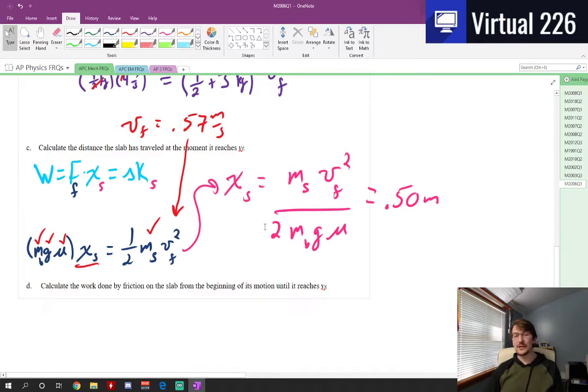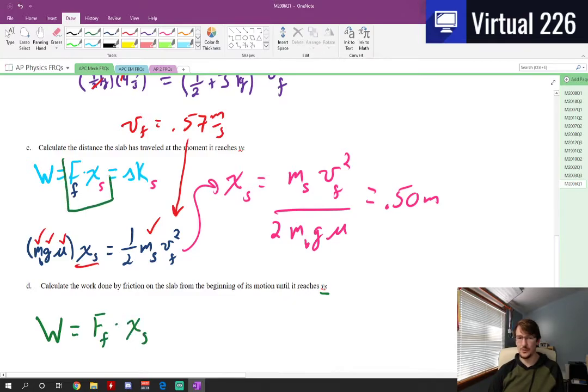Doing it this way is also really nice because in part D we're asked to figure out what is the work done by friction on the slab from the beginning of the motion until it reaches the speed VF, which means that we just need to say work is equal to the force of friction times the distance we've traveled, which is literally what we just did above it, except now we know the distance. So this final answer here just quickly becomes M of the block times G coefficient of friction. So that's friction right there. And then times the distance we've traveled, which is XS.